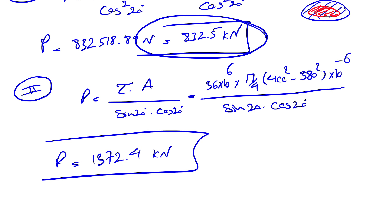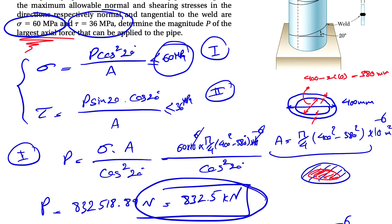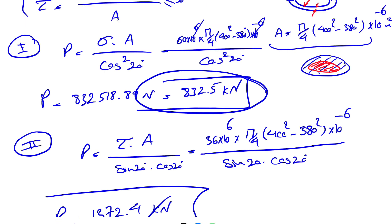As I said, we have to go with the lowest one because that way we're going to be safe for the other one. Because if you pick the 1372, we know that this is going to make stress more than definitely 60 megapascal. So it's going to fail. And we have to go with the P 832.5 kilonewtons in order to be safe in here.